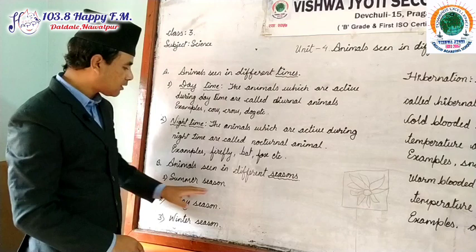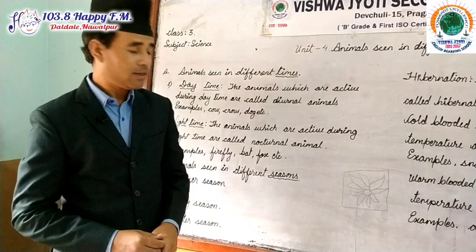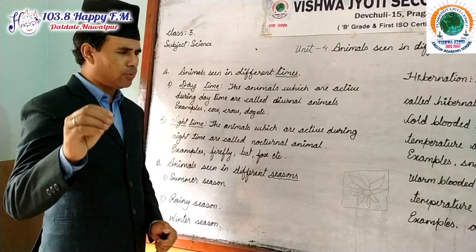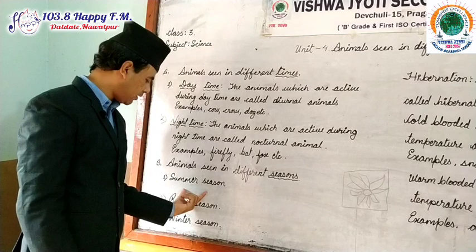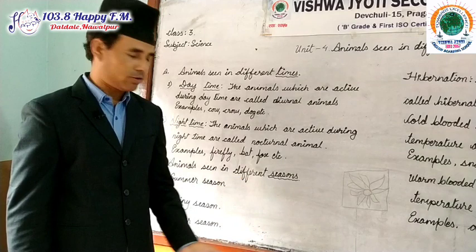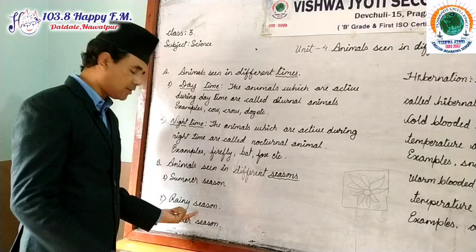Summer seasons are very warm and hot. During summer seasons, you would have observed rats, snakes, snails, mosquitoes, houseflies, and different types of insects — they are active during the summer season. During the rainy season, snails, leeches, and liver flukes are active.